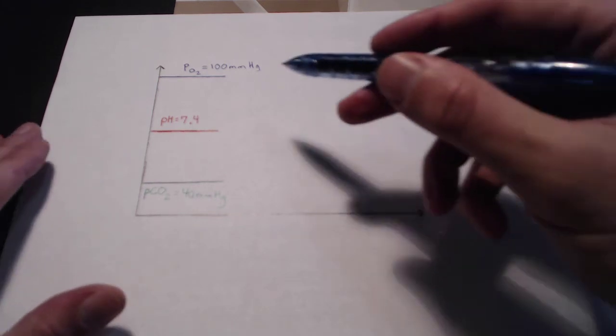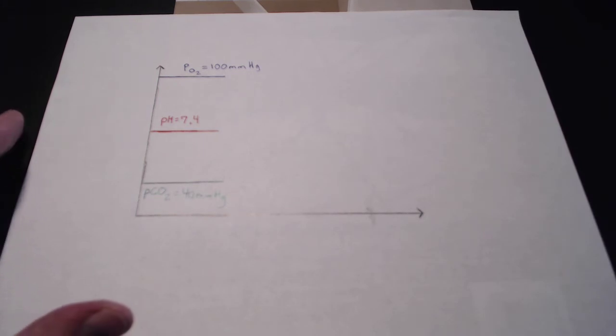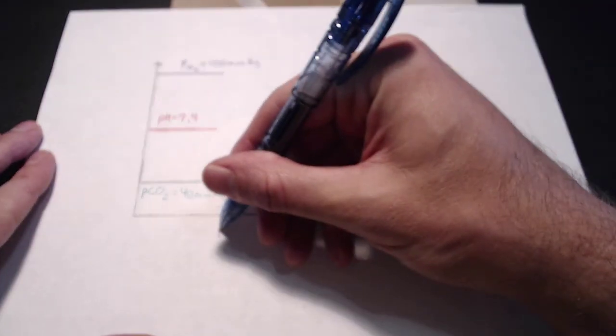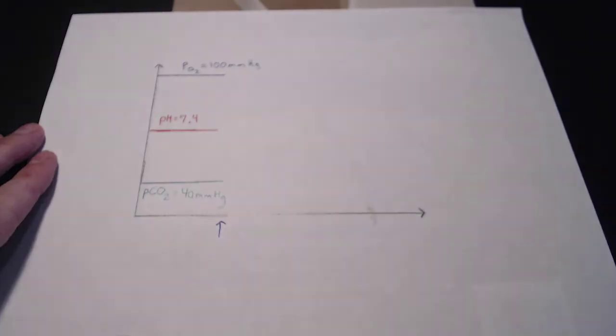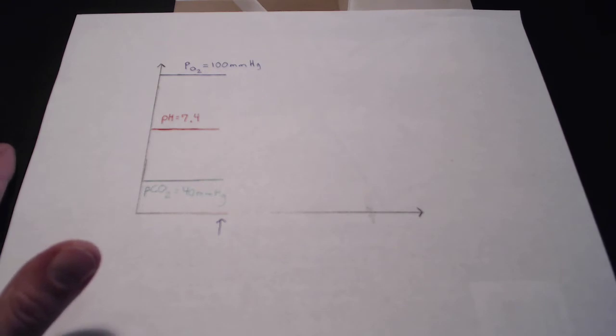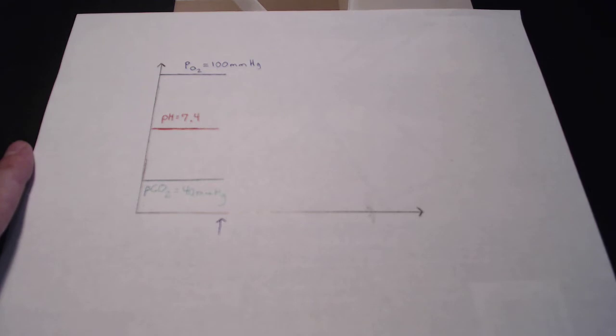So right here in this graph, we have our three different parameters that are at their homeostatic set point values. So PO2 is 100, pH is 7.4, PCO2 is 40. So these are what we expect these values to be when everything is fine, when we are normal ventilating. So at this point right here in the graph, I'm gonna put a little arrowhead right there. At this point in the graph, let's say that we start hypoventilating. We are not breathing enough, we're not bringing in enough oxygen, and we're not getting enough carbon dioxide out. So let's see what happens to these three different parameters as hypoventilation occurs.